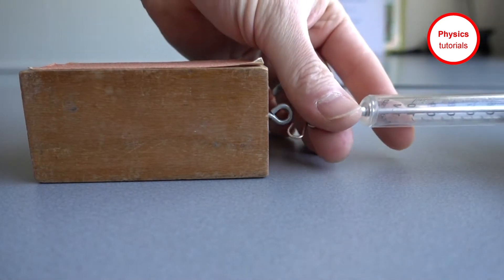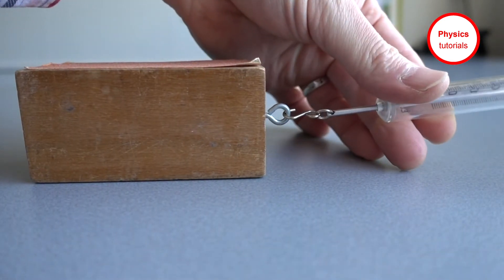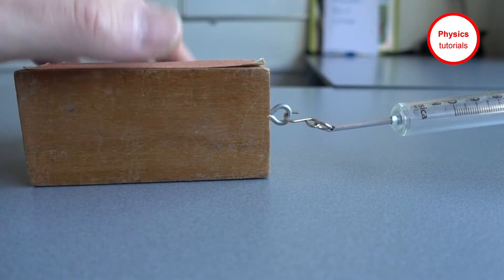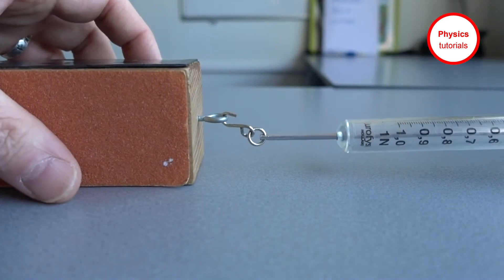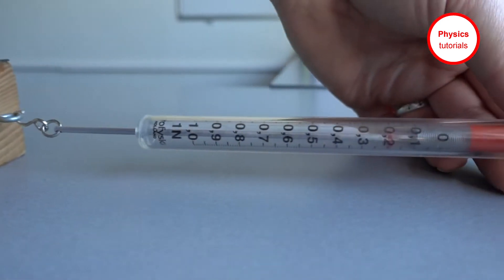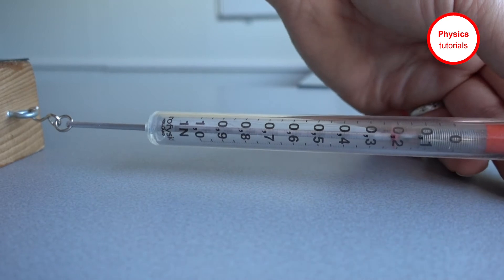First I'm going to attach the spring balance to the block. Then I'm going to place the side which is made out of wood on the table and I'm going to pull the spring balance with a steady speed forward.